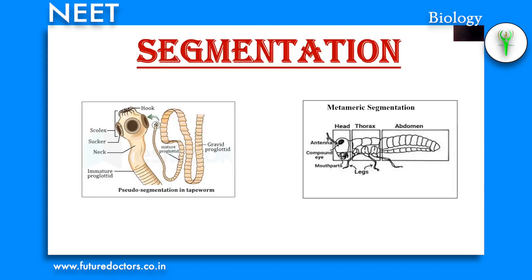Segmentation: the body is externally and internally divided into segments. Metameric segmentation and pseudometamerism — segmentation that simultaneously divides the body both externally and internally is called metamerism or metameric segmentation. Pseudometamerism is found in tapeworms, where the body is divided into parts or segments called proglottids. They develop from the neck but are not embryonic in origin.